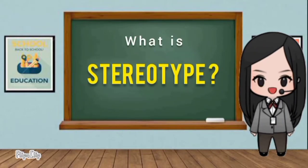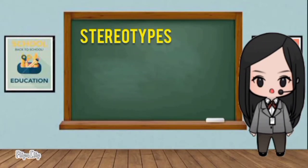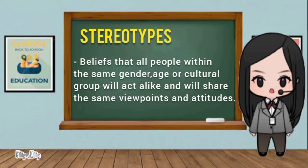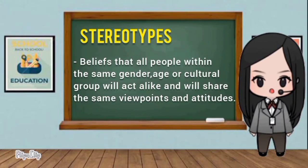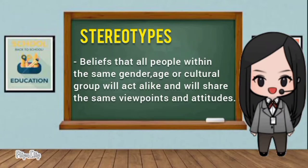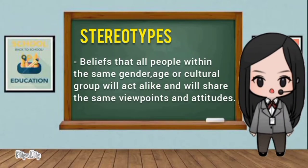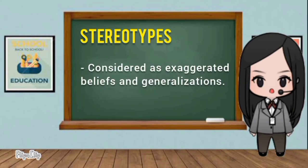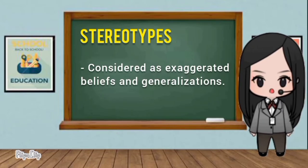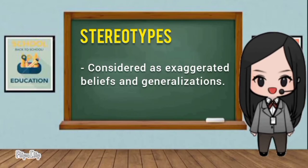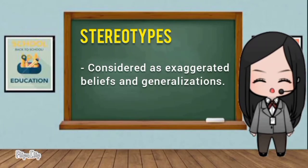So what is a stereotype? Stereotypes are beliefs that all people within the same gender, age, or cultural group will act alike and will share the same viewpoints and attitudes. They ignore unique identity, which is why it is considered as a form of discrimination. They are considered as exaggerated beliefs and generalizations without allowing individual personalities, which create positive and negative acceptance and effects to different groups. They may be true to some, but not to all.